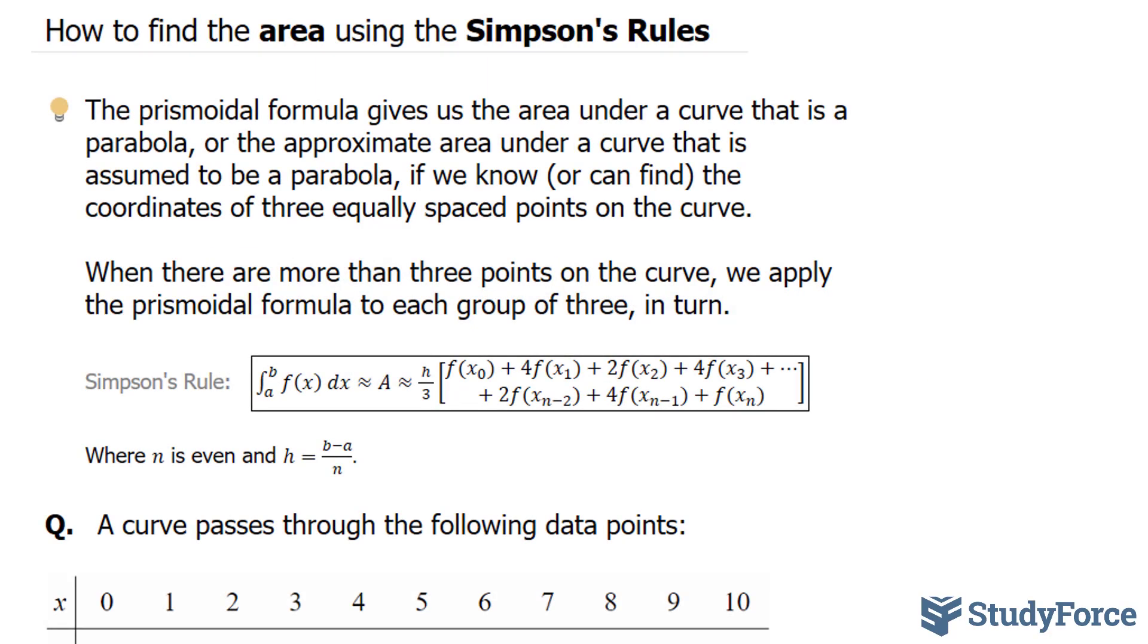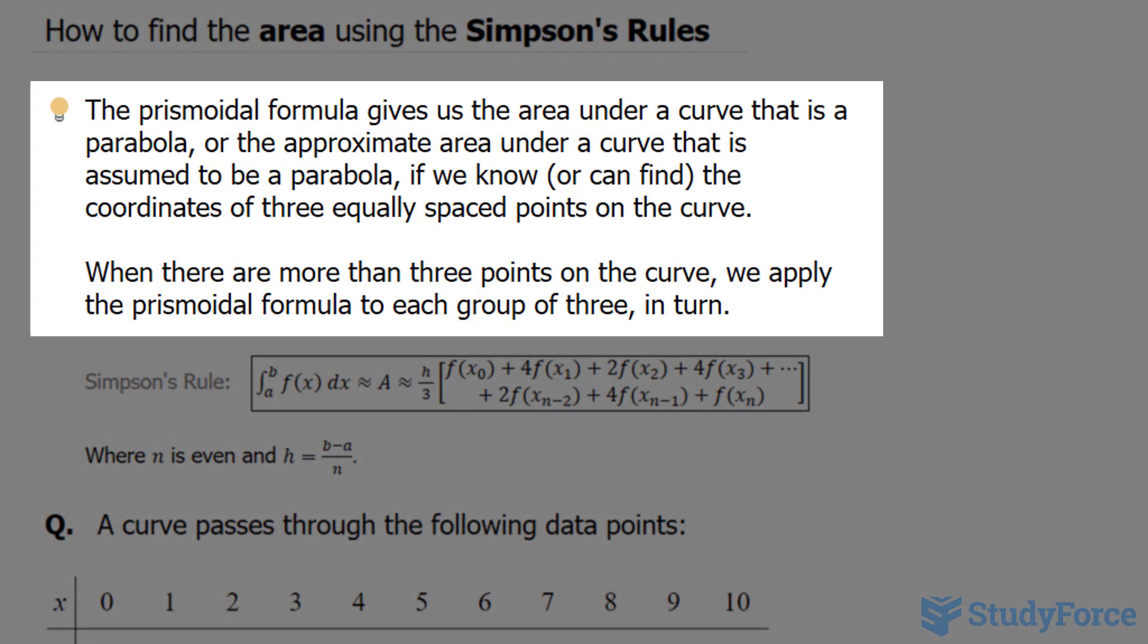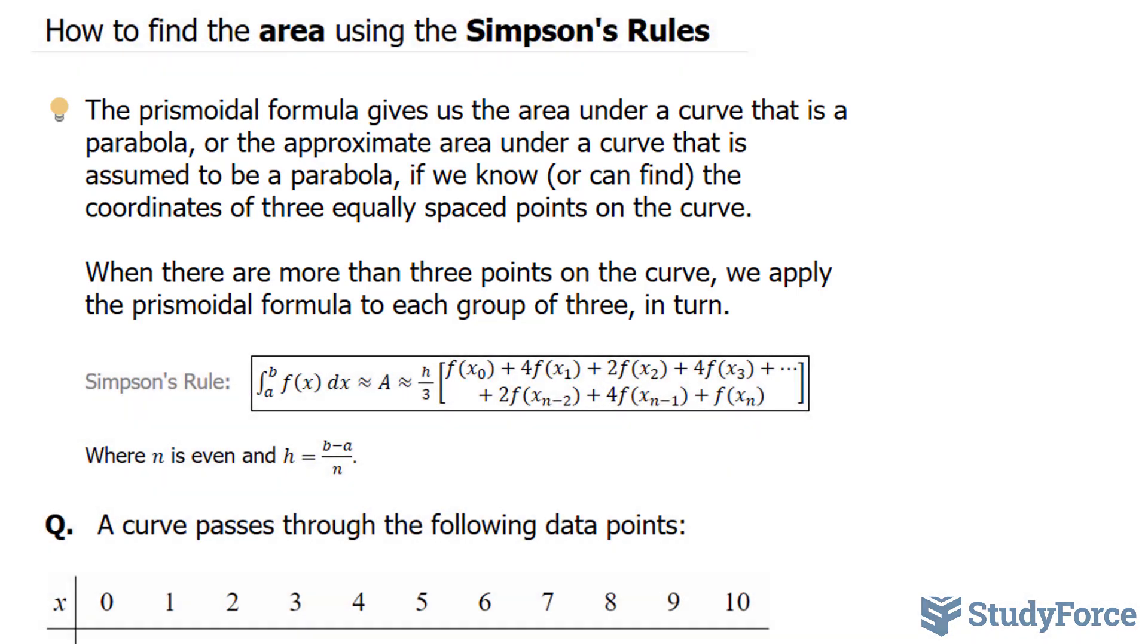In this quick lesson, I'll show you how to find the area using Simpson's rule. In the previous video, we focused on the prismoidal formula. The prismoidal formula gives us the area under a curve that is a parabola, or the approximate area under a curve that is assumed to be a parabola if we know or can find the coordinates of three equally spaced points on the curve.